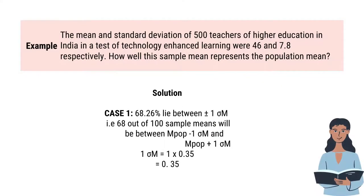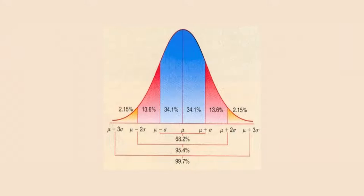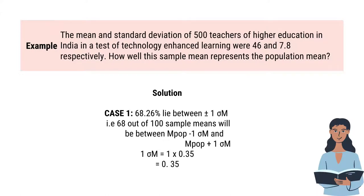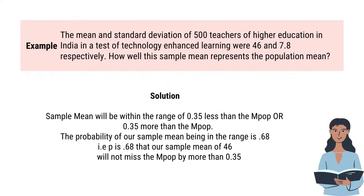Case 1: If we check the table, 68.26% of cases lie between plus minus 1 sigma. That is, 68 out of 100 sample means will be between population mean minus 1 sigma m and population mean plus 1 sigma m. We have 1 sigma m equal to 1 into standard error of mean, which is 0.35. So, 1 into 0.35 equals 0.35. The sample mean will be within a range of 0.35 less than or 0.35 more than the population mean. The probability of our sample mean being in this range is 0.68.